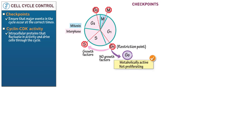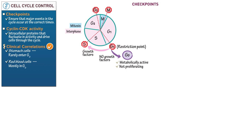Cells remain metabolically active in G0 but do not proliferate. In yeast, progression through the restriction point depends on the presence of nutrients, mating factors, and cell size. In animals, extracellular growth factors stimulate cell division. As a clinical correlation: stomach cells rarely enter the quiescent phase because they have short lifespans and must divide continuously. Red blood cells spend most of their time in G0 and do not divide frequently. Skin fibroblast cells divide more frequently than red blood cells, but do not proliferate until extracellular signals such as injured tissue stimulate them to divide — until then, they remain metabolically active in G0.